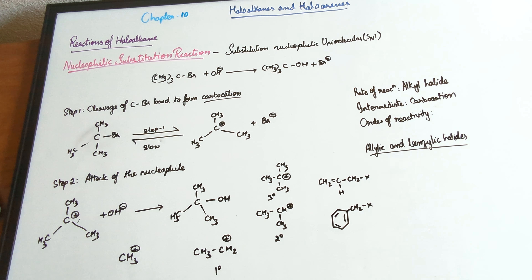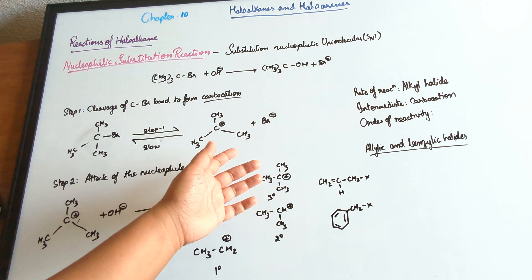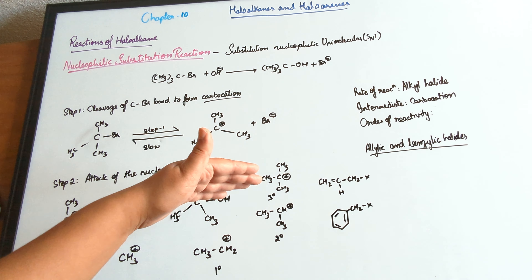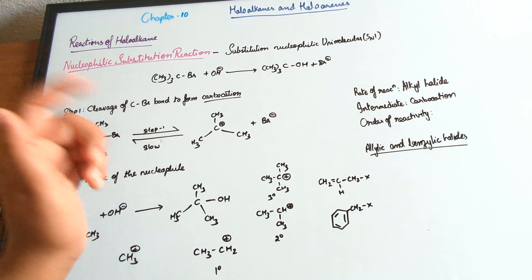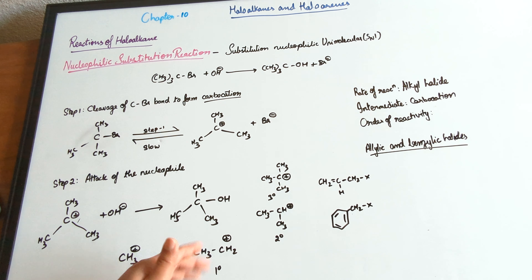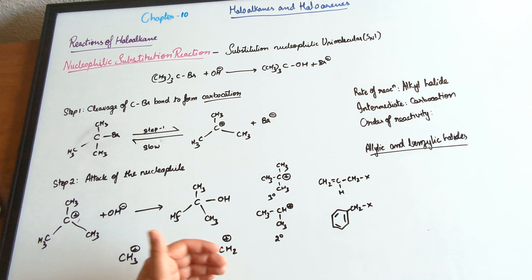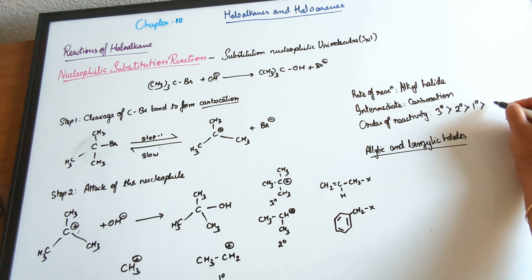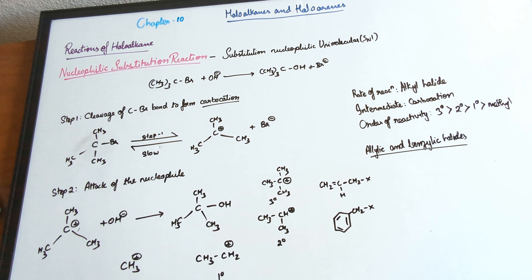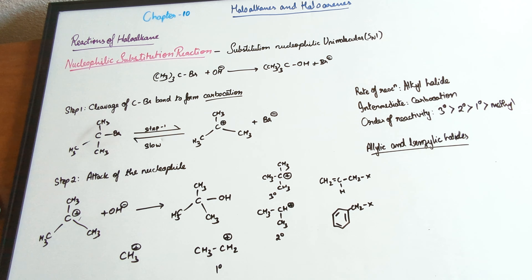Molecules prefer the easier pathway for a chemical reaction. In the case of tertiary alkyl halides, the bulky groups make it impossible for the incoming nucleophile to attack the carbon from the back, so the molecule prefers the SN1 mechanism. On the other hand, primary alkyl halides have only one alkyl group, making it easy for the nucleophile to attack from the back, so they prefer the SN2 mechanism. The order of SN1 reactivity is: tertiary > secondary > primary > methyl — the opposite of SN2.